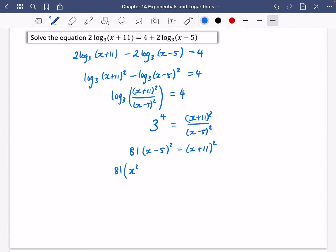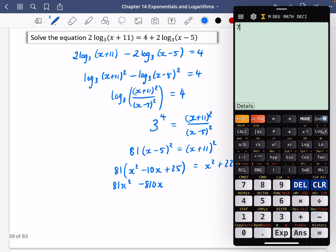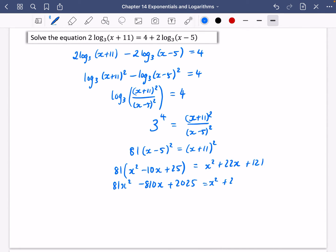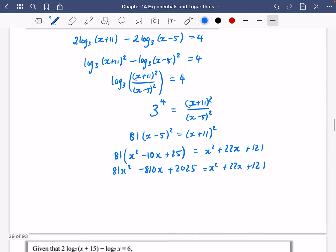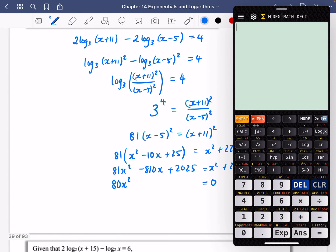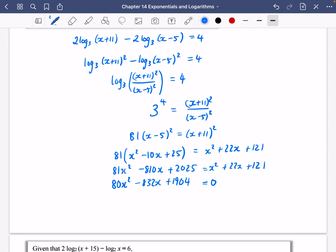So we're just going to do a quadratic expansion. So it's going to be x² minus 10x plus 25 equals x² plus 22x plus 121. So that's 81x² minus 810x plus 2025 equals x² plus 22x plus 121. So I'm going to make it become a quadratic. So I'm going to get everything on one side and make it equal zero. So that's going to be 80x² minus 832x, and then I've got 2025 minus 121, and I get 1904.